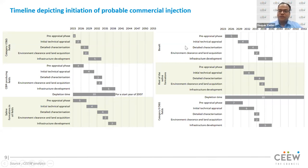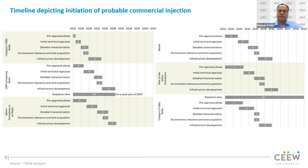Contrast that with basalts, which are not very well understood. The pre-appraisal phase alone takes about five years, and the earliest we can start CO2 sequestration in basalts is 17 to 18 years from now — by 2041. We have done similar studies for saline aquifers and category two oil and gas fields. The key message is: yes, India has committed to 2070 net zero, and we may want to use CCS after 2040. But if you want to use CCS by 2040, you have to make a start today. If you start planning only by 2035 or 2040, you'll only be able to inject CO2 by 2055 or 2060.